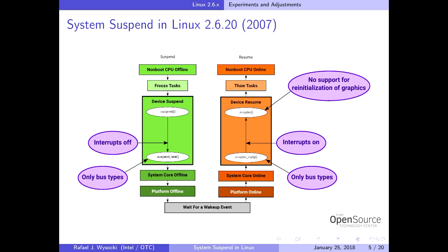There were just two phases, with one phase run with interrupts off — more like a system core offline than device suspend. There was one callback per device, and it was shared with hibernation, which led to quite a bit of confusion. One important thing happened in 2008, kernel 2.6.24: we reordered the CPU offline and online operations with respect to device suspend and resume.